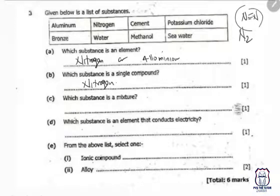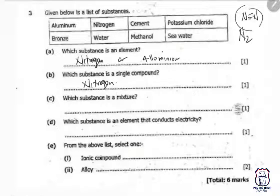Which substance is a mixture? A mixture is a combination of two or more substances that are not chemically combined. They can be separated using physical means. Sea water is a mixture, and cement is also a mixture because it is made up of other substances.